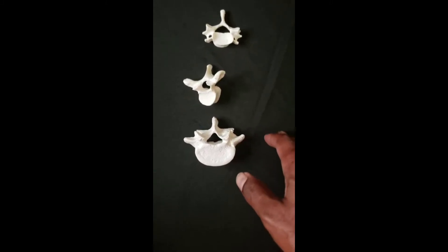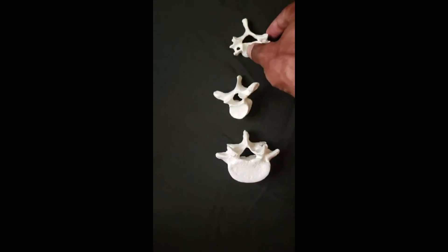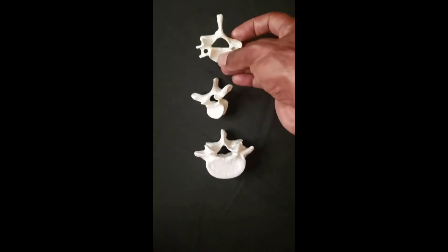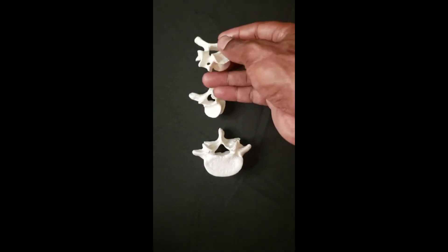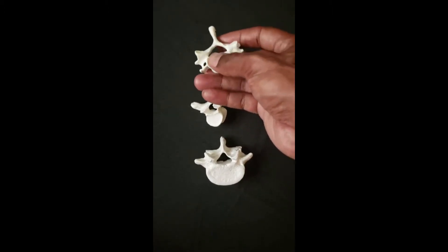First thing first, like back in the day we used to teach categories of bones and we used to refer to vertebrae as irregular bones. They don't have a specific shape to them, they just look like something else.